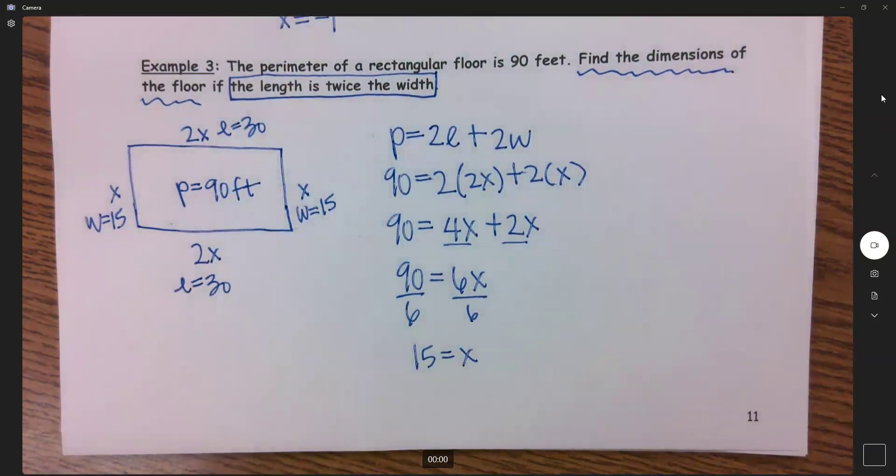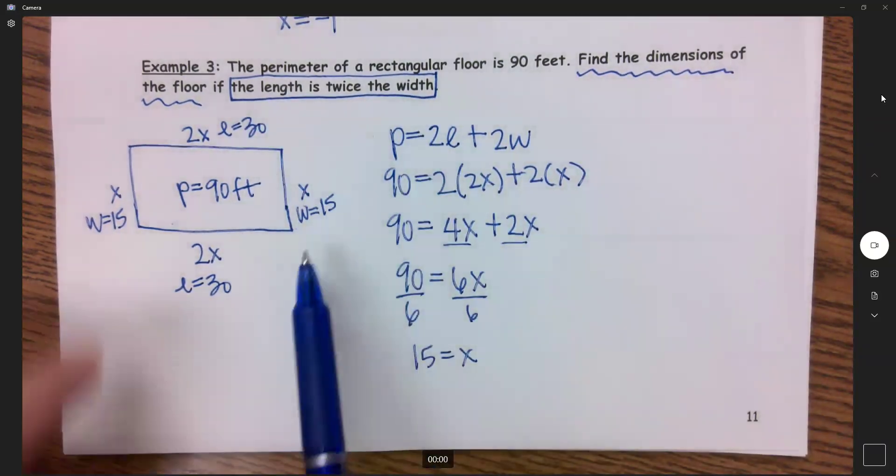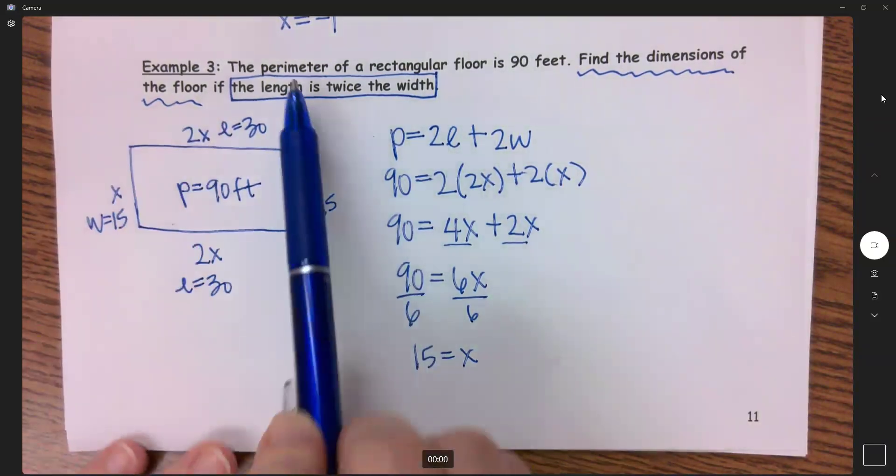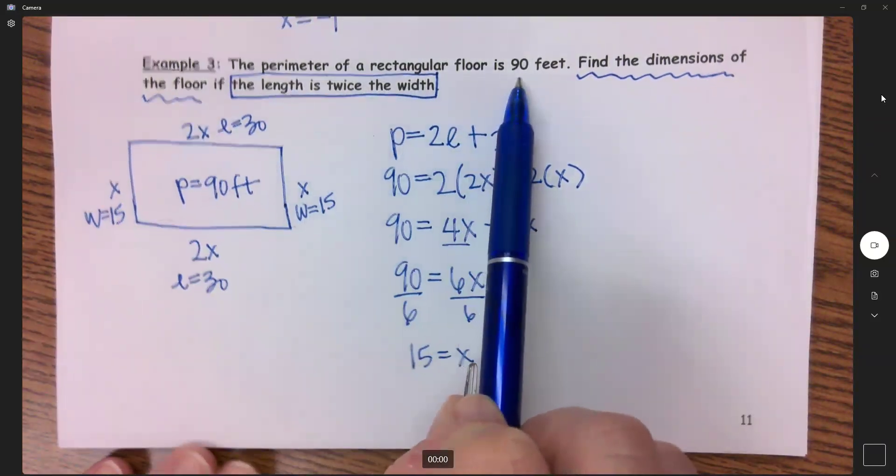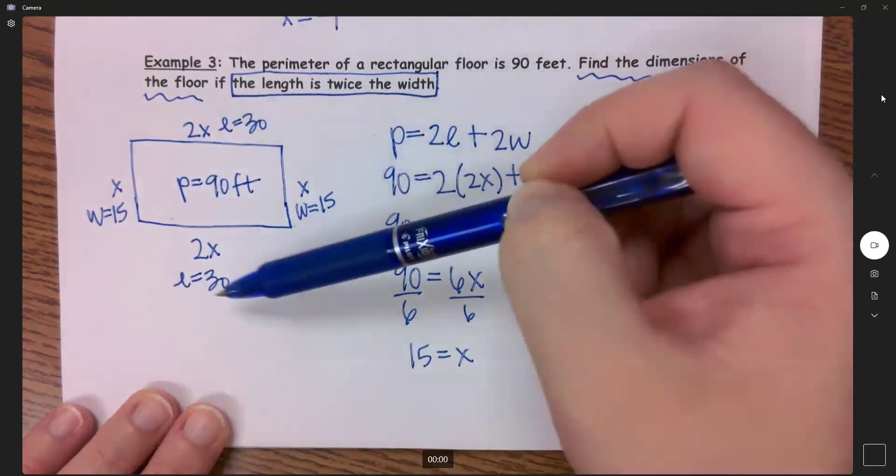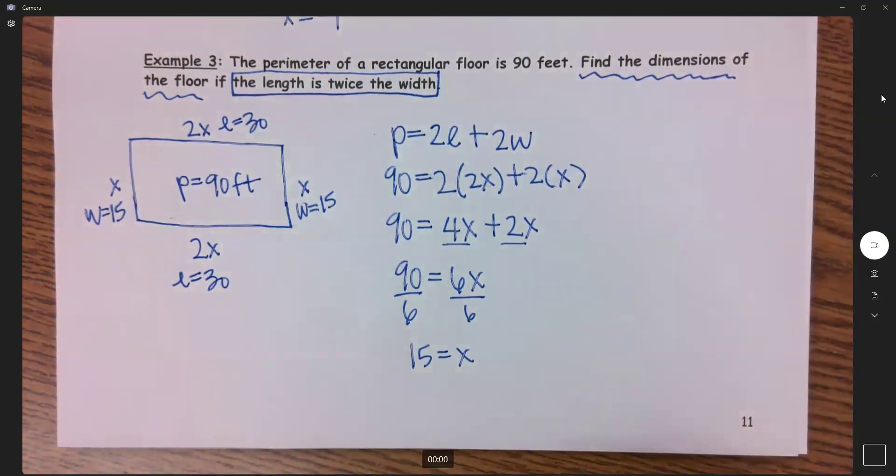Now, typically we don't like word problems, and I don't quite blame you. But also, word problems are nice because does this make sense? Is my length twice my width? Yes, we have 15 and we have 30. And is the perimeter of this floor 90 feet? Well, if you add up 30 plus 15 plus 30 plus 15, you do get 90. And so it does check out.